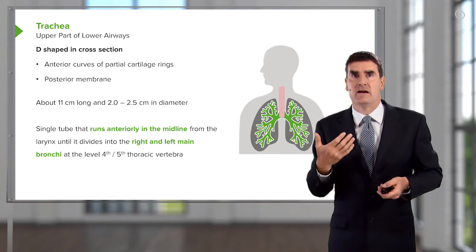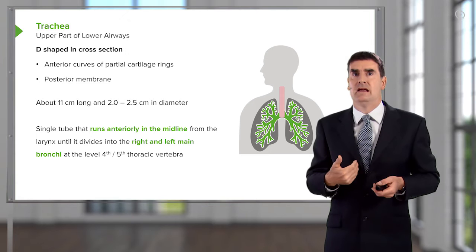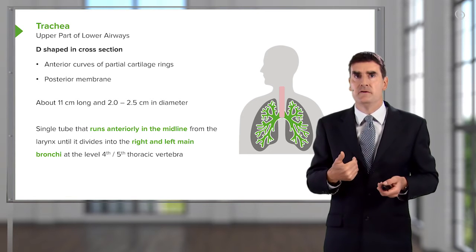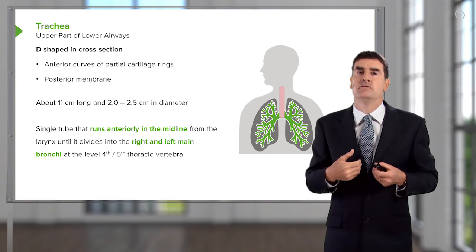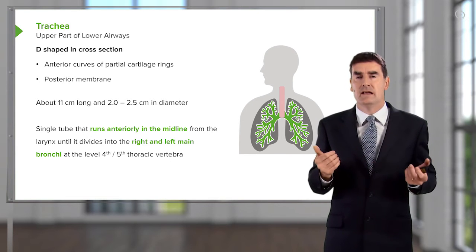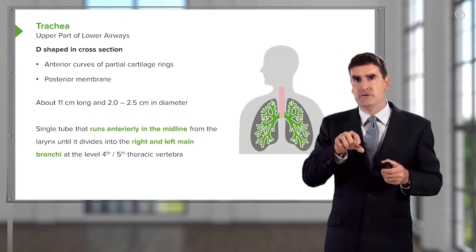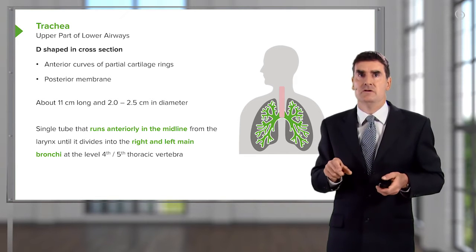It runs from the larynx right down to about the level of the fourth or fifth thoracic vertebrae, where it divides into the right and the left main bronchi, and that division is called the carina.